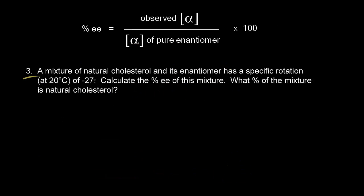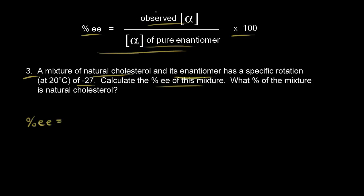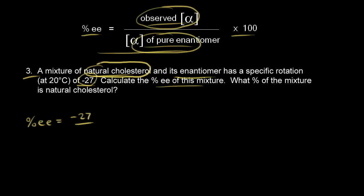For our last problem, we have a mixture of natural cholesterol and its enantiomer with a specific rotation of negative 27. Our goal is to calculate the percent enantiomeric excess using the equation: percent EE equals the observed specific rotation divided by the specific rotation of the pure enantiomer, times 100. The observed specific rotation is negative 27, and the specific rotation of pure natural cholesterol from problem one was negative 31.5.